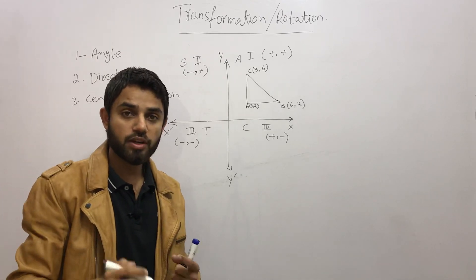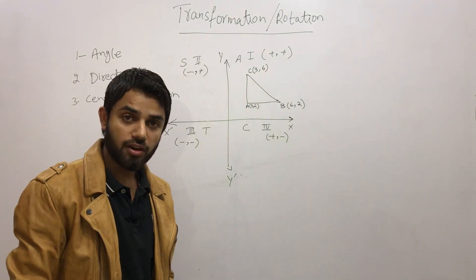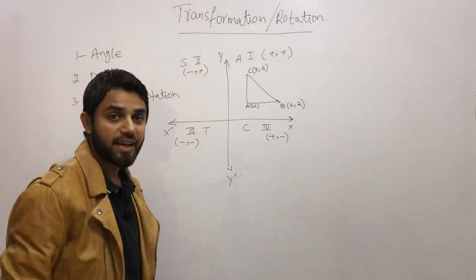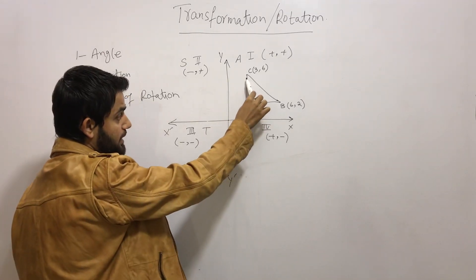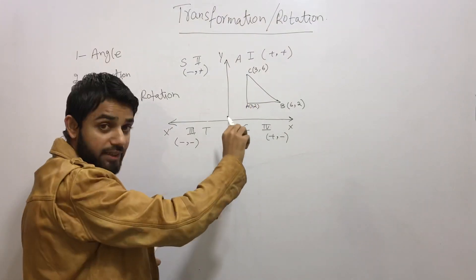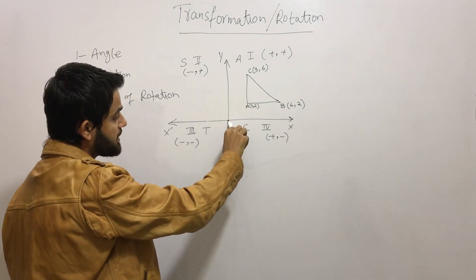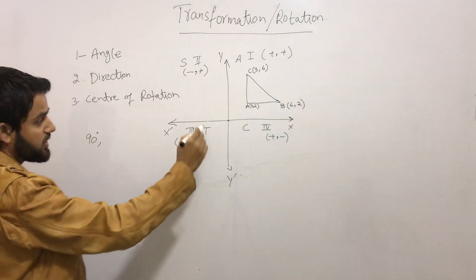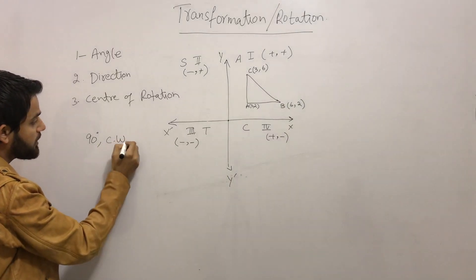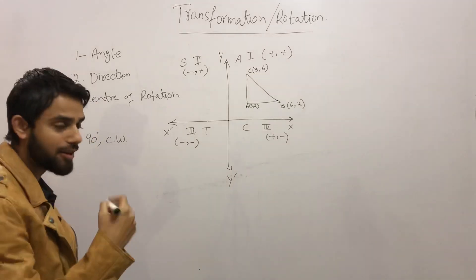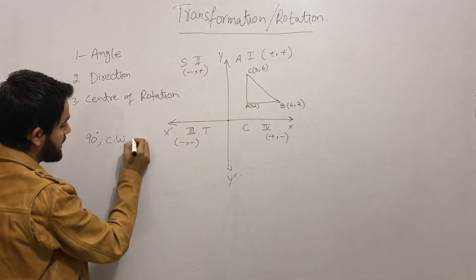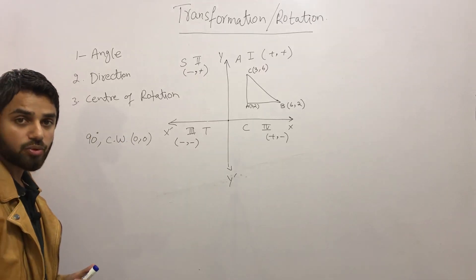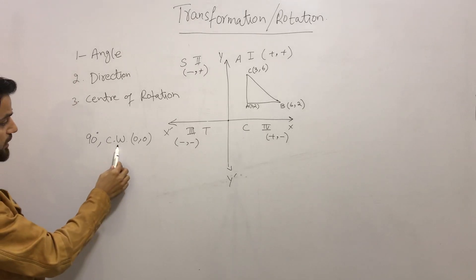We are going to learn rotation clockwise and anti-clockwise, keeping the center of rotation at the origin. First, I will rotate triangle ABC by 90 degrees clockwise. So the angle is 90 degrees, direction is clockwise (C.W.), and the center is O(0, 0). These are the three things needed to rotate any figure.